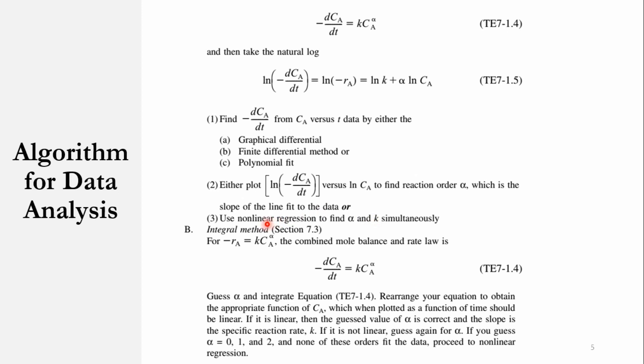Next method is the integral method to find the order of the reaction. We have to write equation 7-1.4 here. And then this is a guess method basically, that we have to guess the value of alpha. For example, we say it is a zero order reaction, so we will say alpha is equal to zero—we are guessing it. And then we have to rearrange it, and then we have to plot it. And in plotting, if it comes out to be a linear plot, then the guess value is correct.